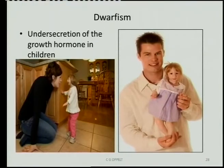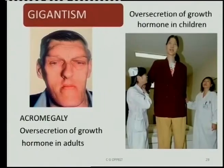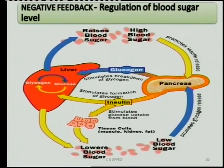For example, growth hormone: under secretion causes dwarfism, and over secretion causes gigantism.